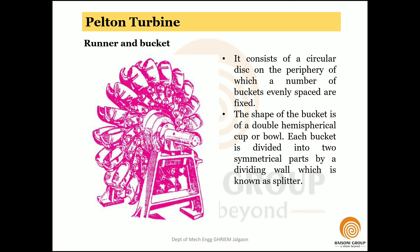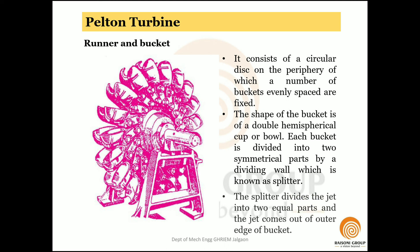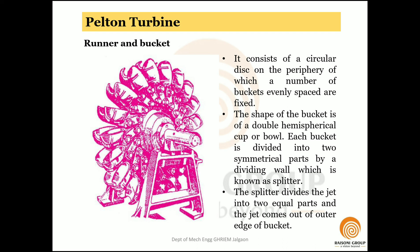The two hemispherical cups are separated by a dividing wall known as the splitter. The function of the splitter is to divide the jet into two equal parts — one part exits from one hemispherical bowl and the other exits from the second hemispherical bowl.